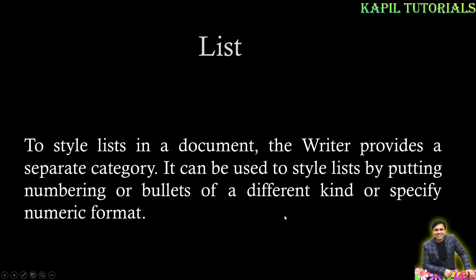Now the next topic: list styles. To style lists in a document, Writer provides a separate category. It can be used to style lists by putting numbering or bullets of a different kind or a specified numeric format. Sometimes we have to make a list and give numbers or bullets. Let's see it practically.